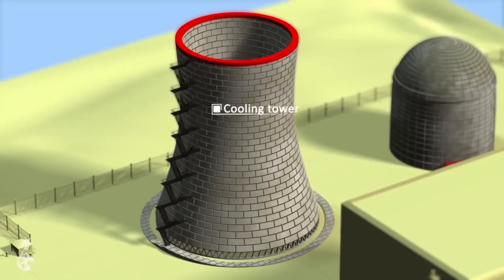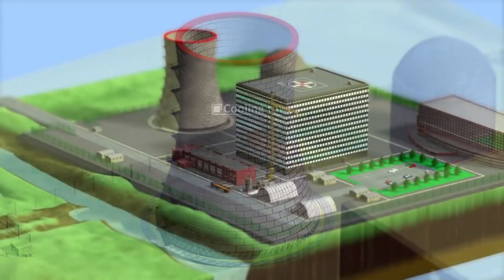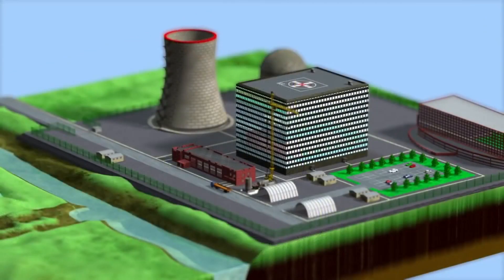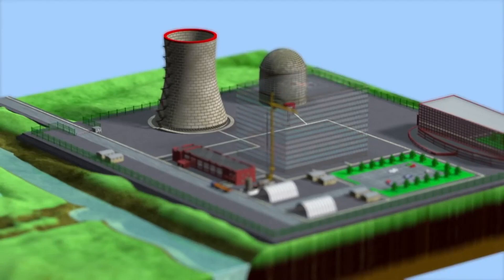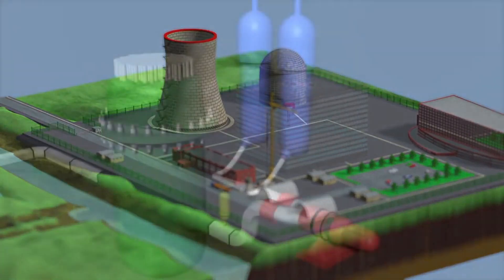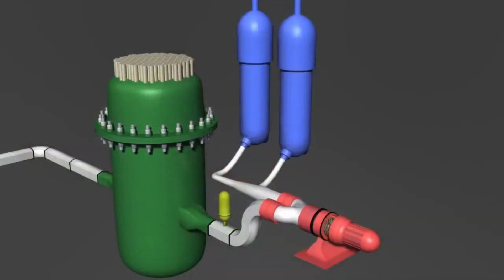But what about safety? The truth is that nuclear power is one of the safest forms of energy production. Stringent safety measures are in place to prevent accidents, and modern nuclear plants have advanced technology that ensures utmost protection. Moreover, nuclear power is clean and environmentally friendly. Unlike fossil fuels, it doesn't emit greenhouse gases, contributing to the fight against climate change.